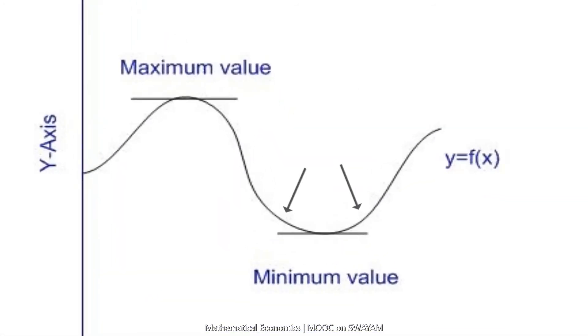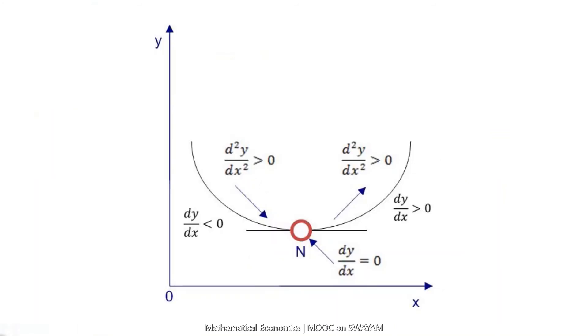The third observation is that immediately before attaining a minimum value, the curve decreases at an increasing rate and immediately after attaining a minimum value, the curve increases at an increasing rate.